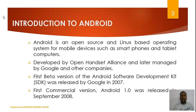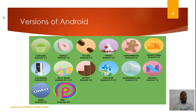Google has released the first beta version, and the second commercial version was released on September 28th. This is the basic version of Android 1. The alpha version is Android 1, and 1.5 is the modified beta version.